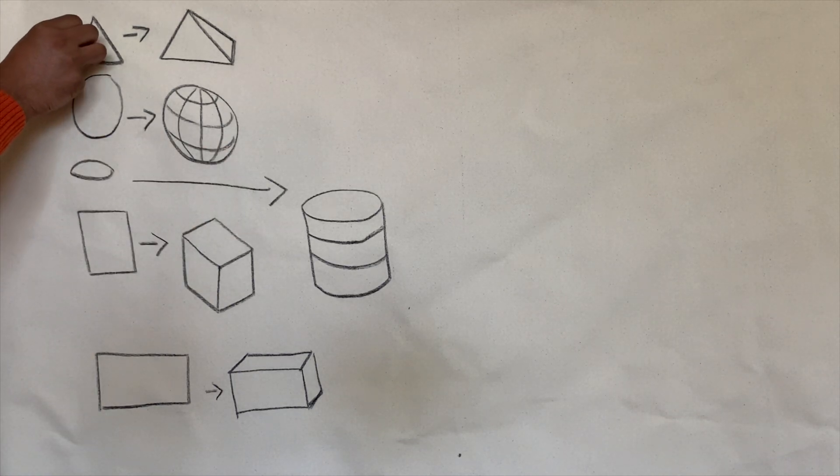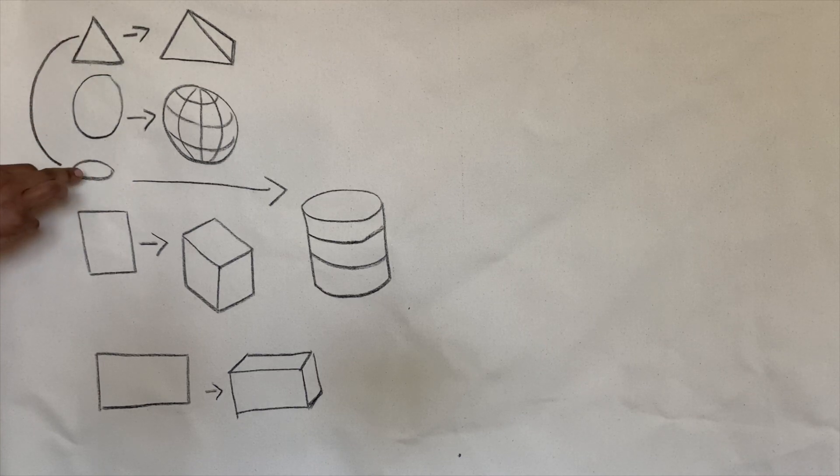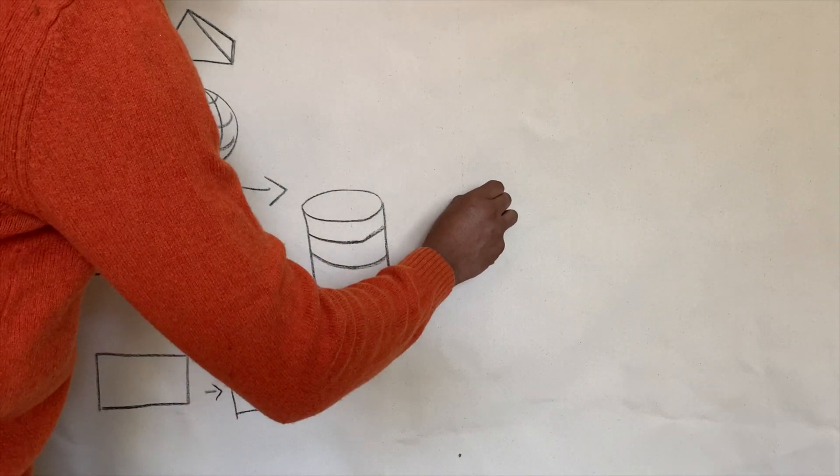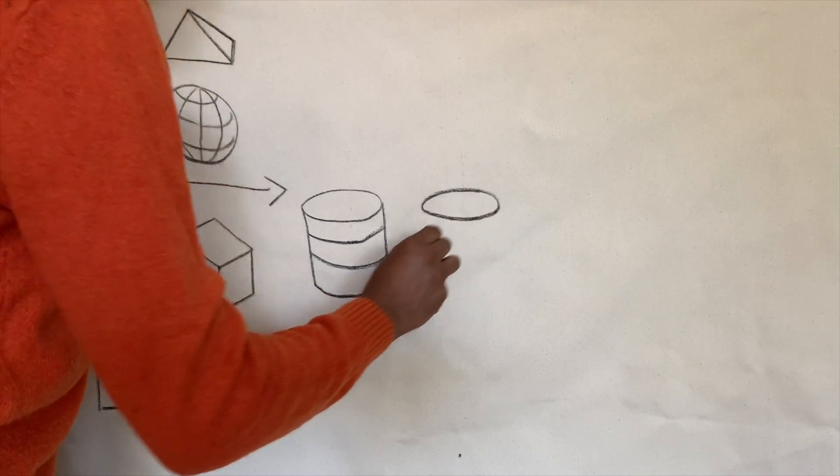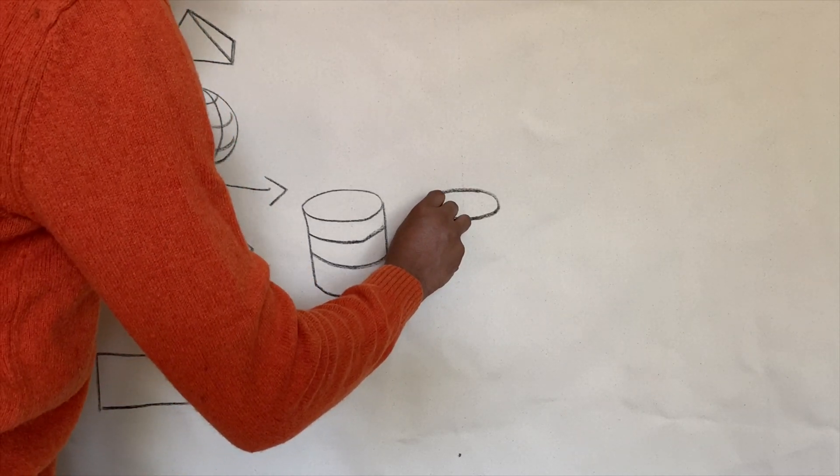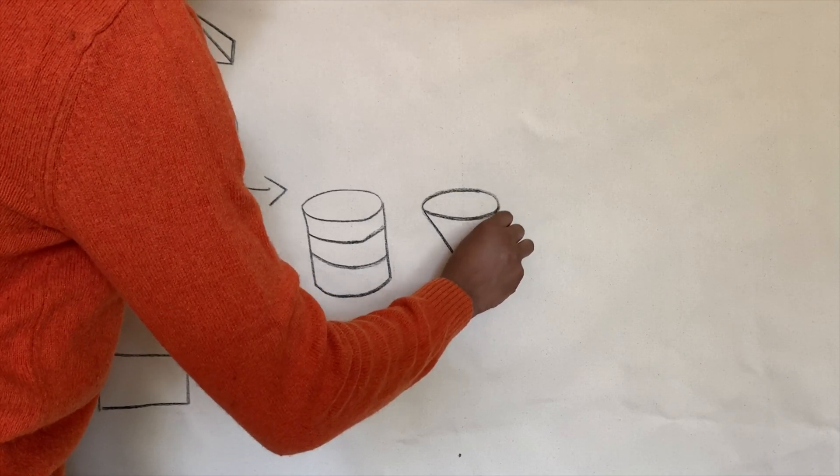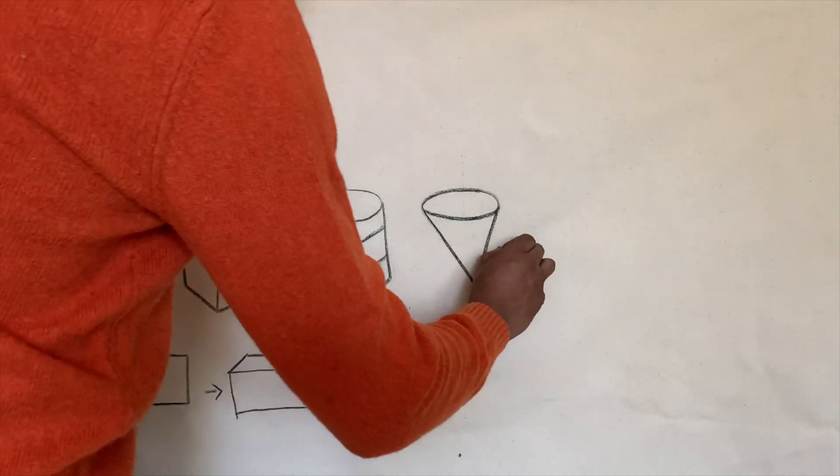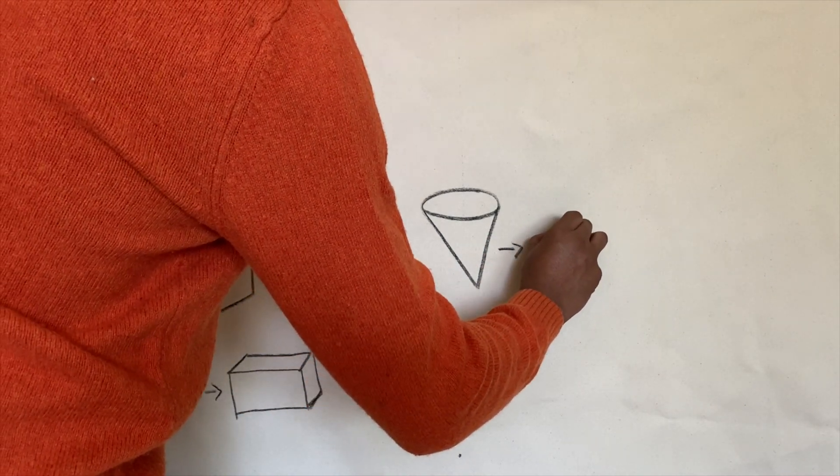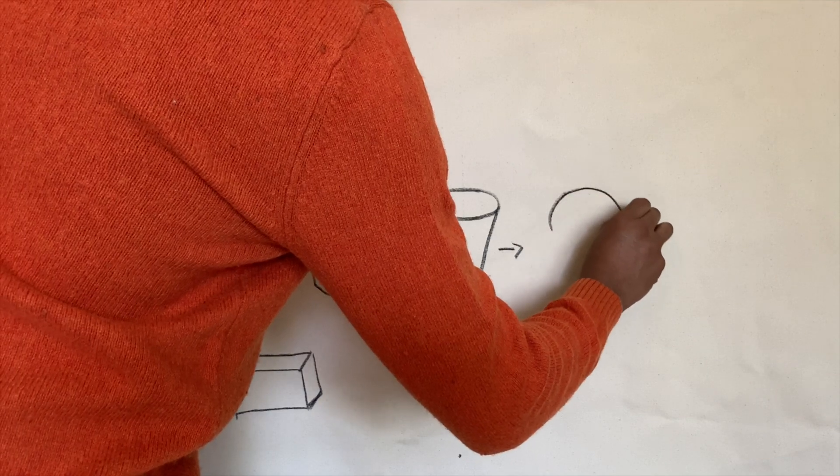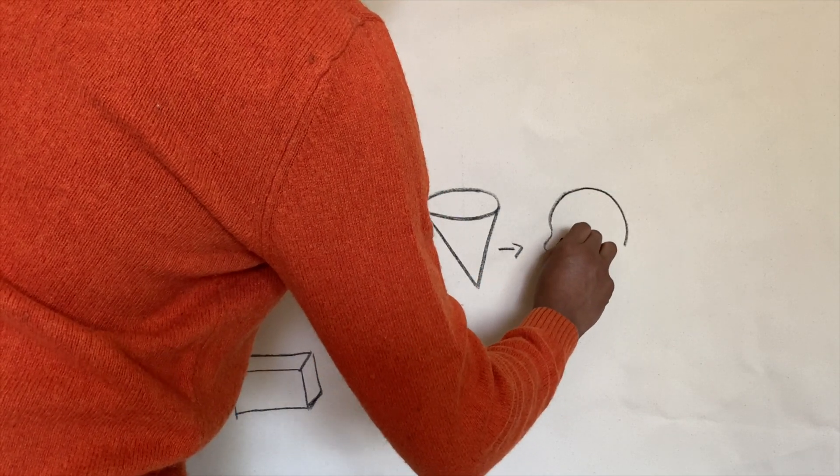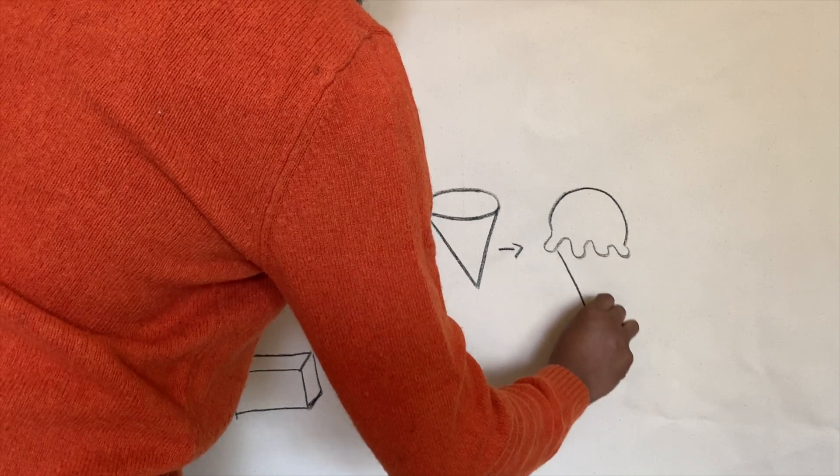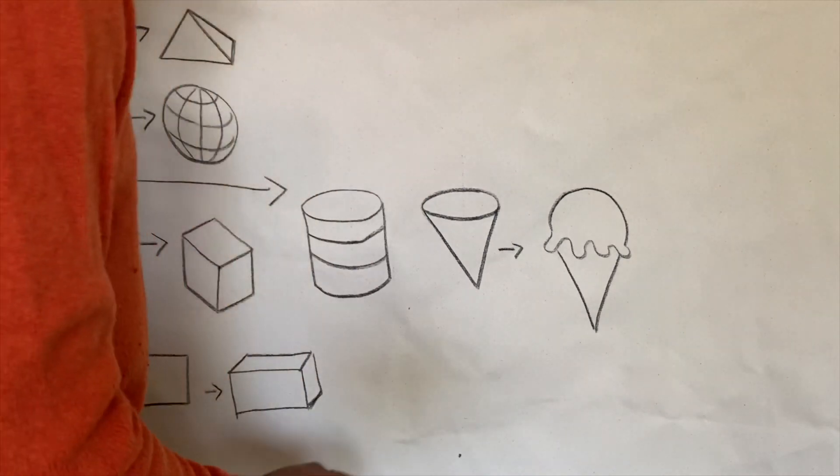If you mix your triangle with an oval, what you get is this. A cone. It also can turn into a nice clean cone.